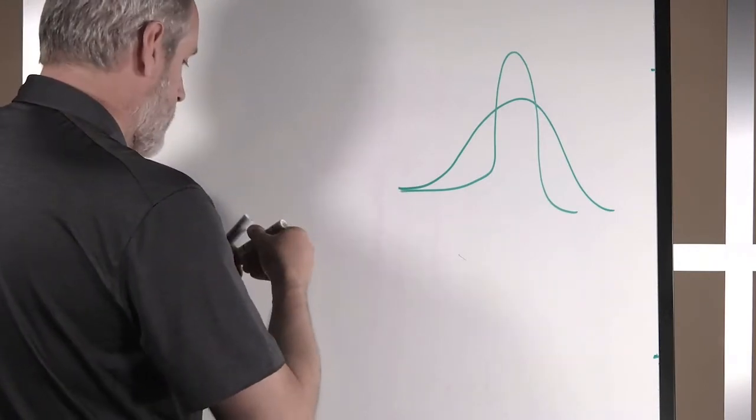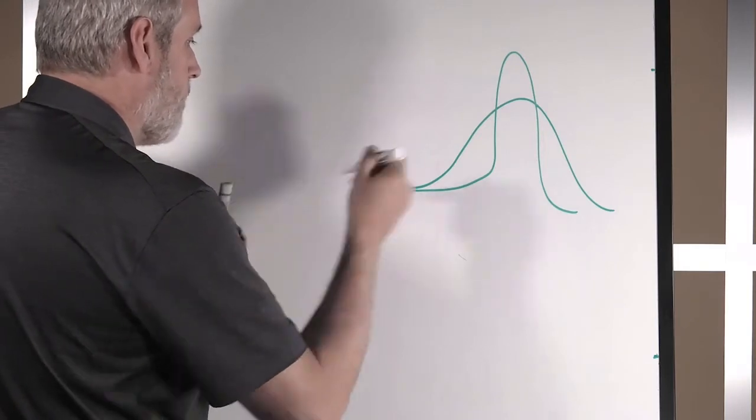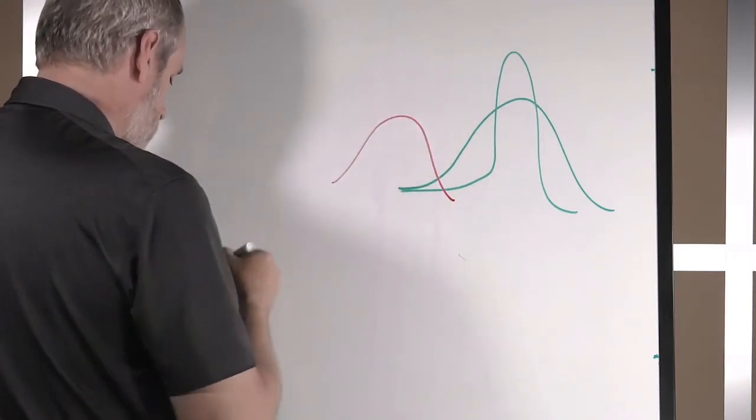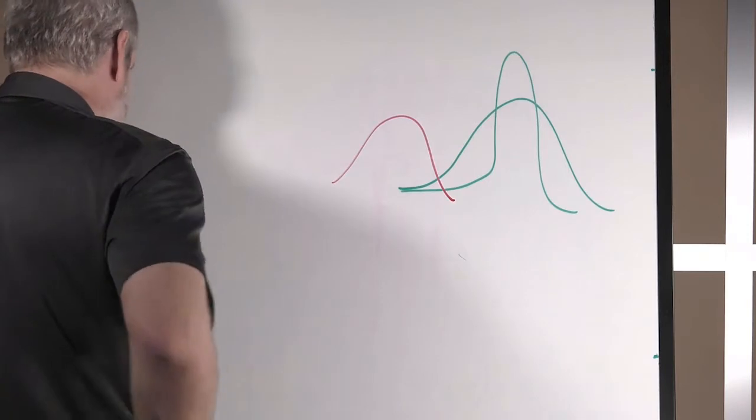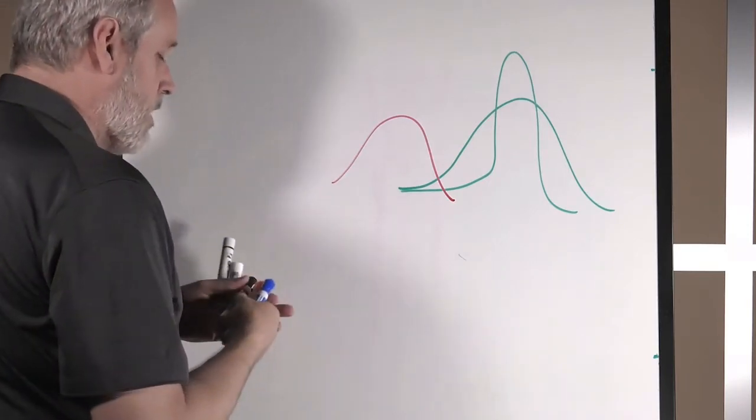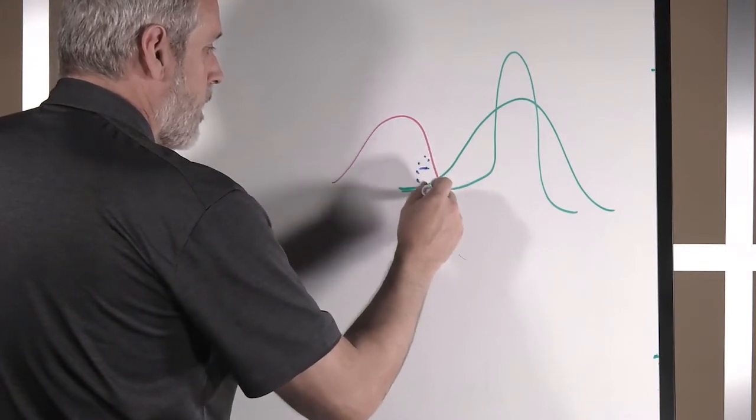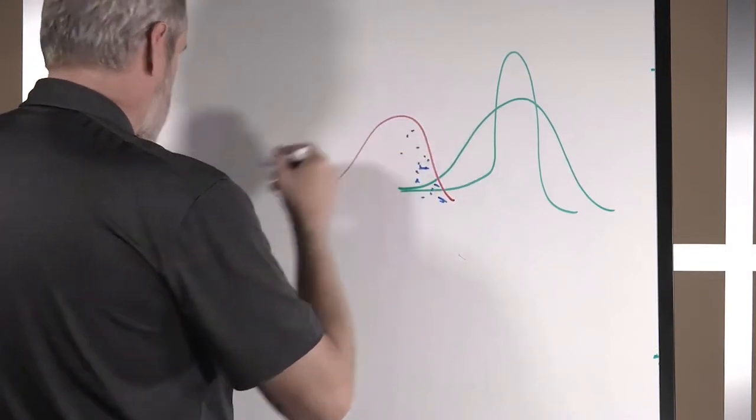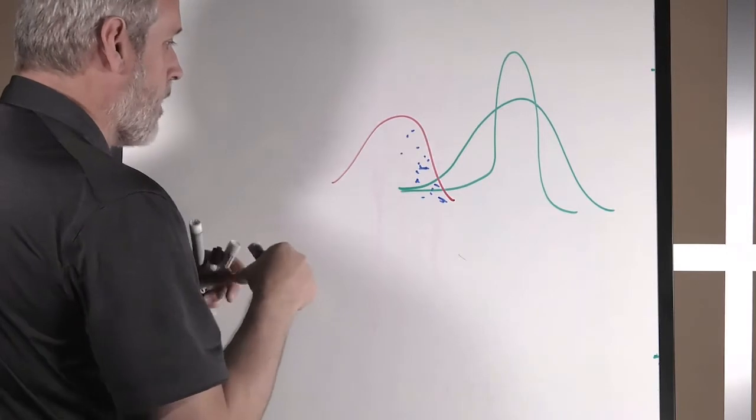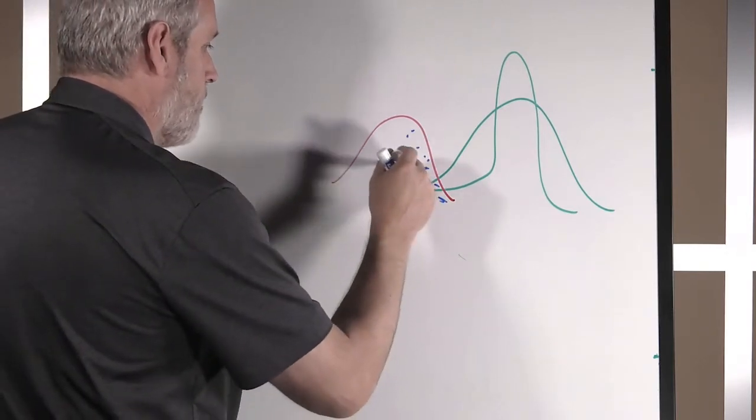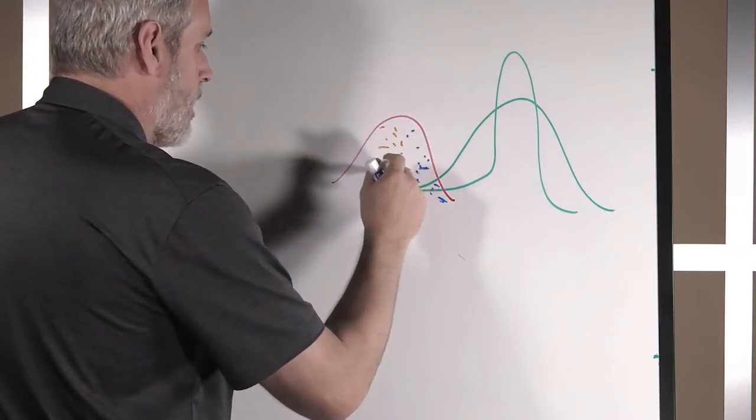Then what you try to do is move this to the left. Well how do you do that? Well it turns out that that is not actually one homogeneous group of defects. What you have is you have several defects of different types and these different colors represent different kinds of defects that make this up.